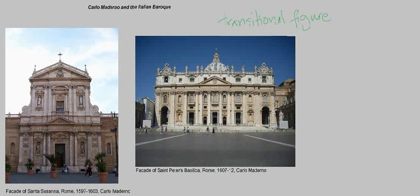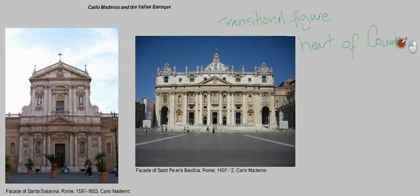The facade of St. Peter's Basilica is also very important, largely because of what it is. It's St. Peter's Basilica, which is the heart of the Catholic Church and the heart of the Counter-Reformation. So clearly a really important commission in that regard.